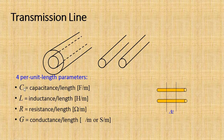We also found that capacitance is only for per unit length, meaning we have taken a small section of the transmission line for which we have written capacitance, inductance, resistance, and conductance.